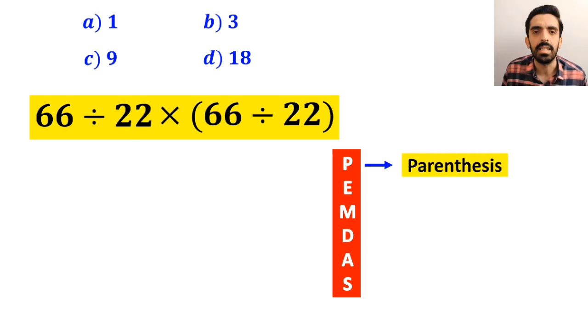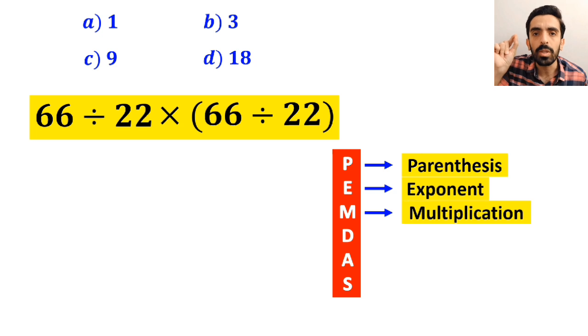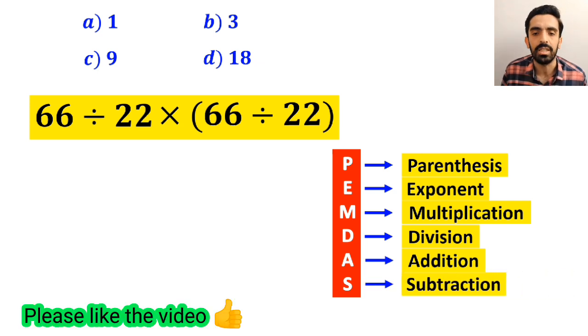According to this rule, P stands for parentheses, E stands for exponent, M stands for multiplication, D stands for division, A stands for addition, and S stands for subtraction.